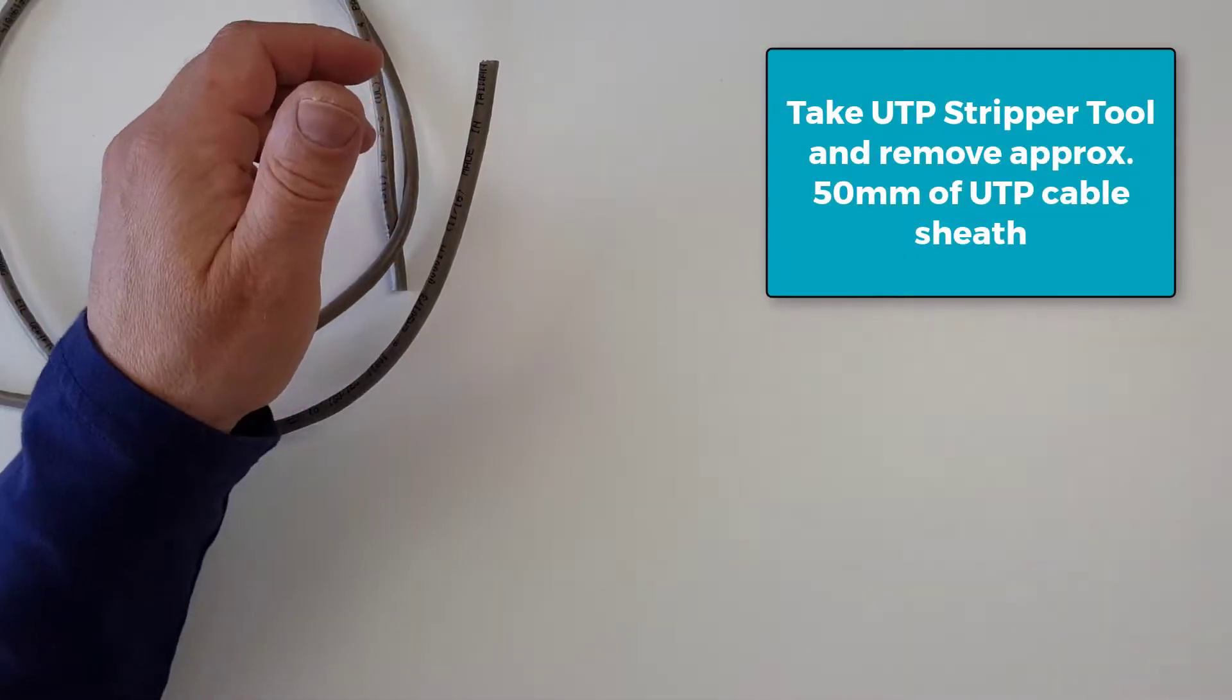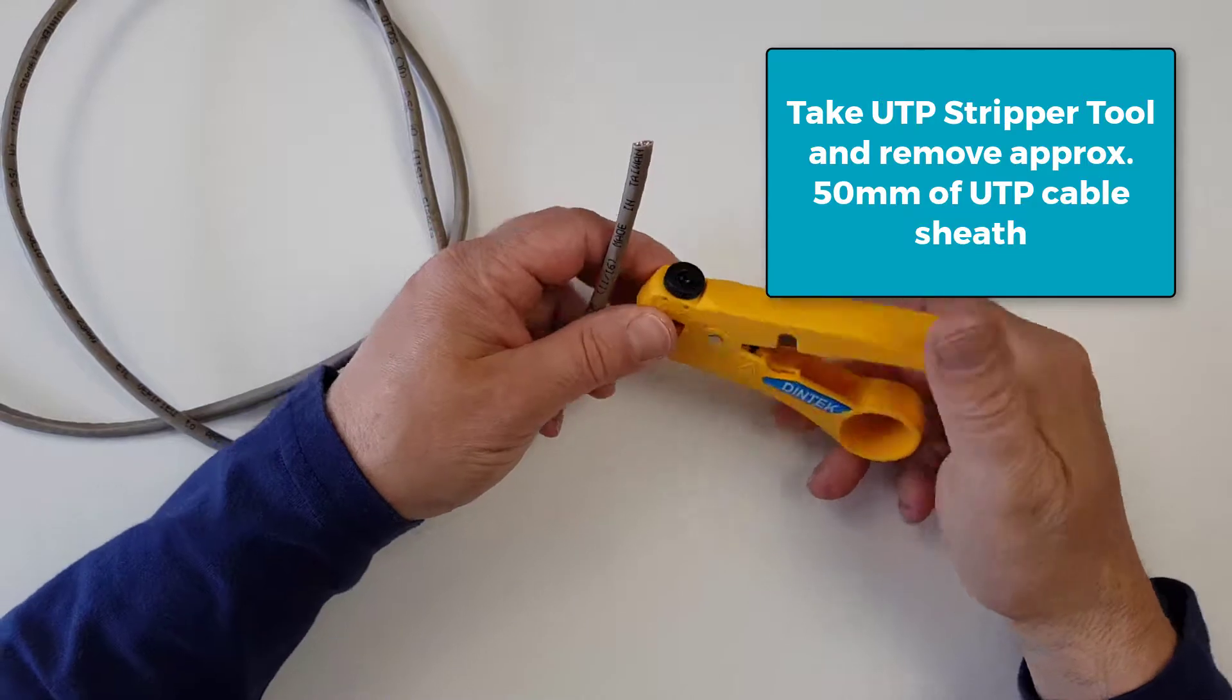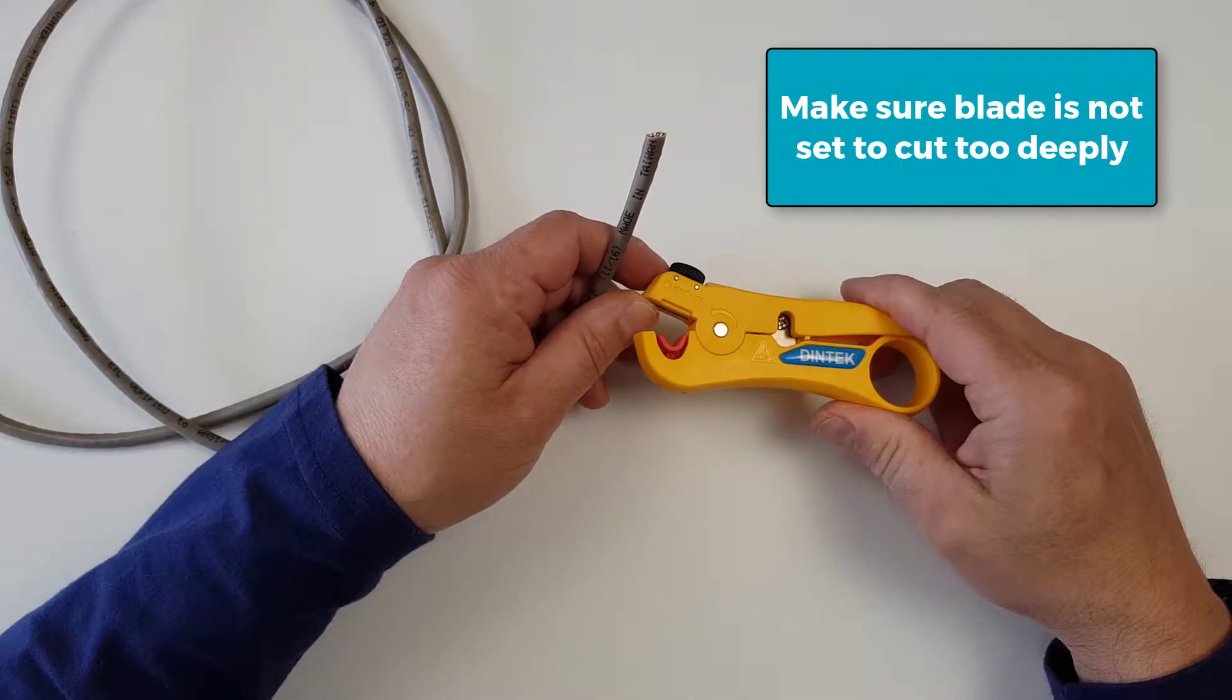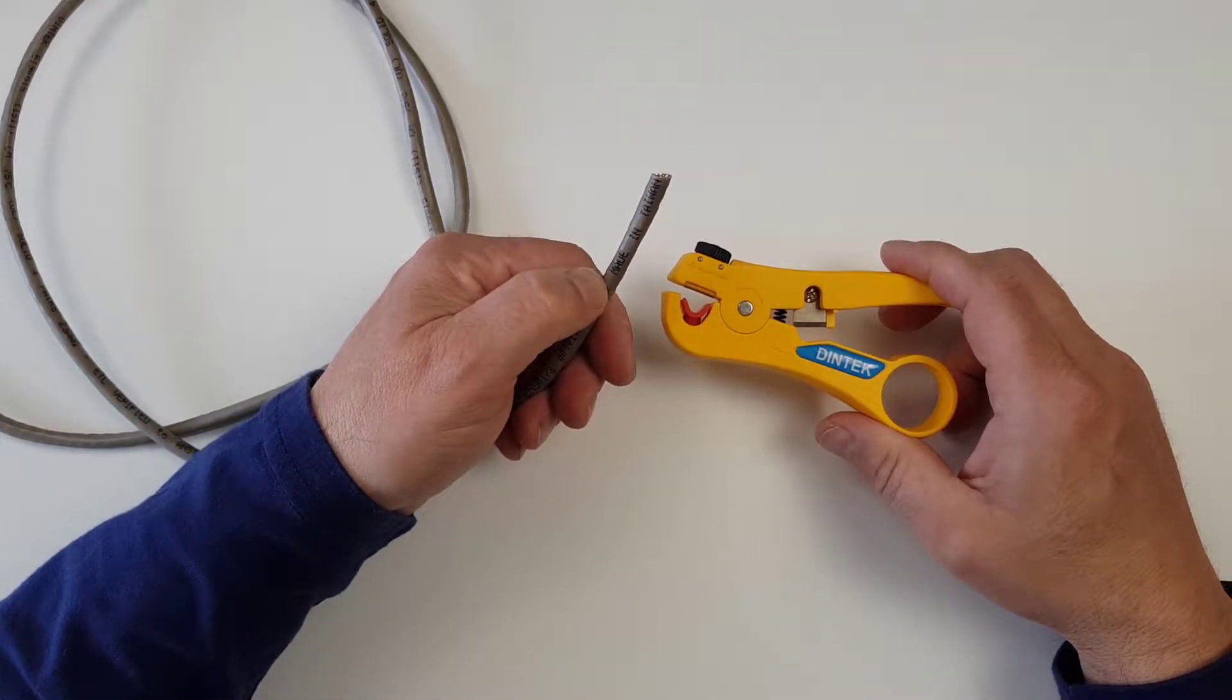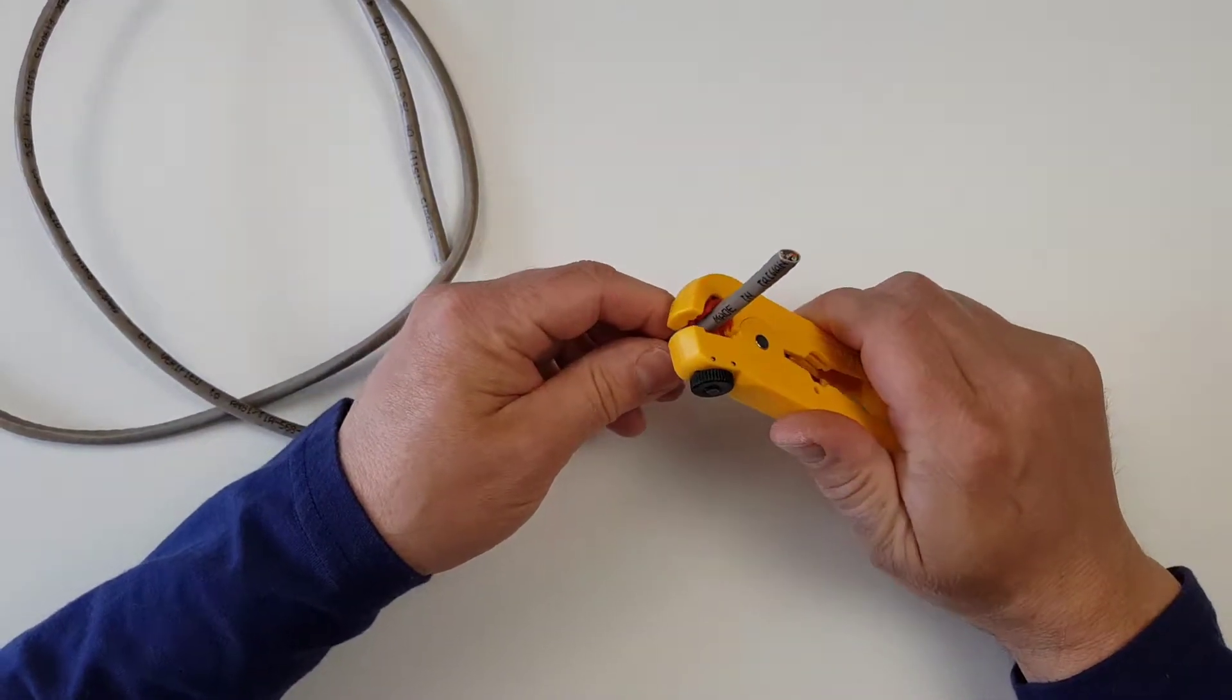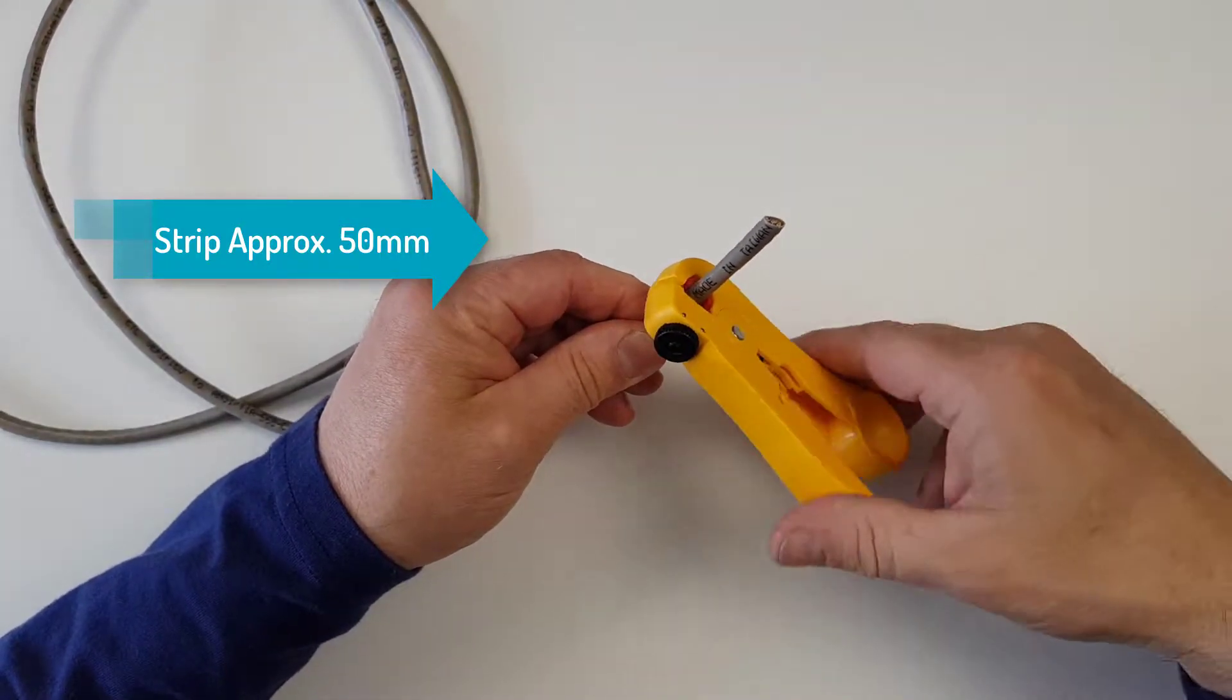Right, so the first thing to do is to strip back the sheath. I am going to use the Dintec UTP strippers and I have set the cutting blade just deep enough so it is just going to score into the sheath without going through and cutting into the wires underneath. I am going to take off about 50mm and I am just going to turn it round once.